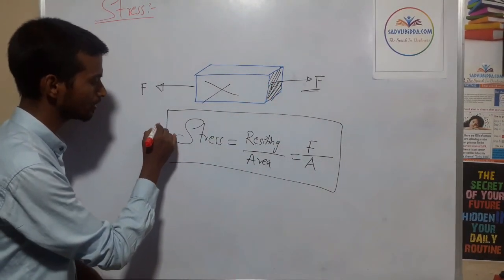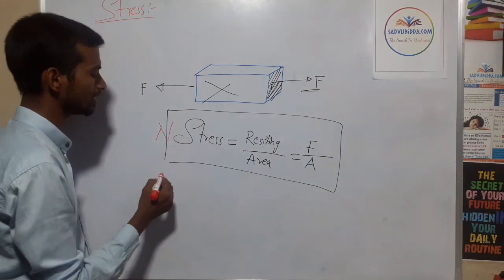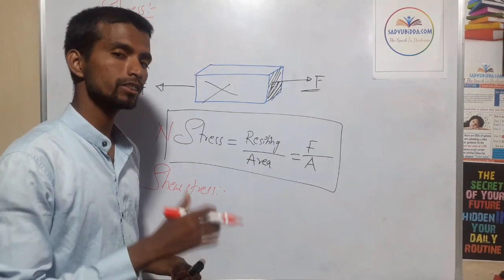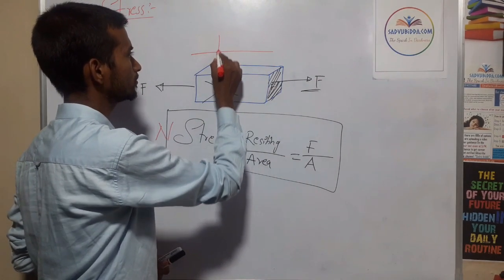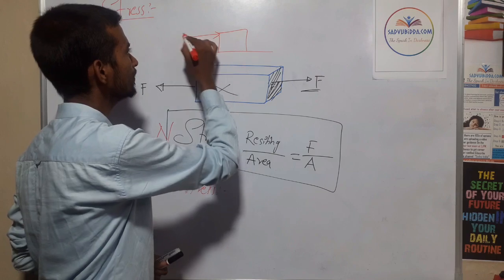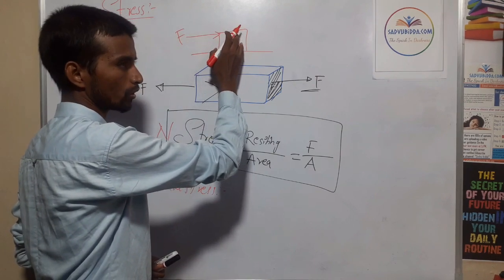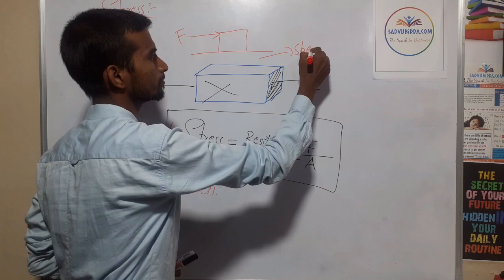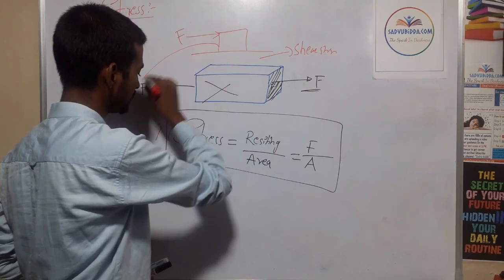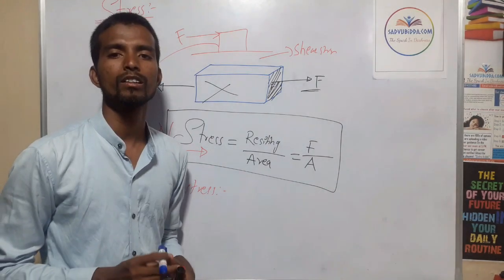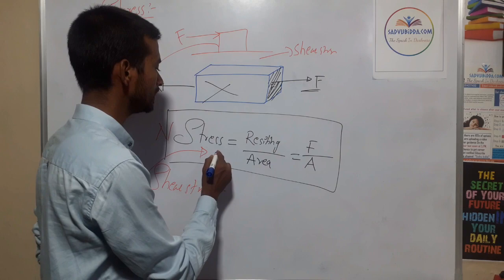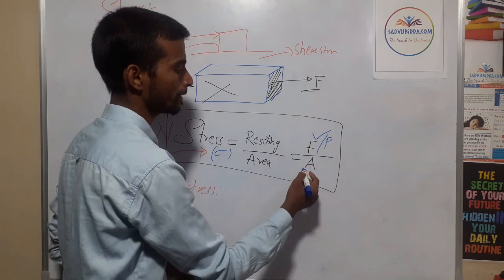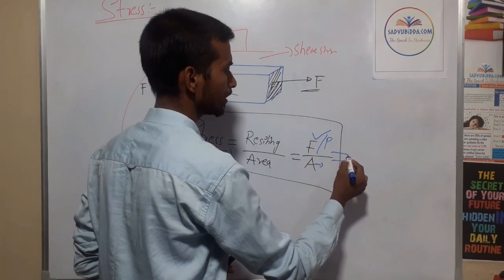Now, what is shear stress? To understand shear stress, consider a block where force F is applied tangential to the plane of the block. The stress produced in this block is known as shear stress, and the formula is the same: force divided by area.